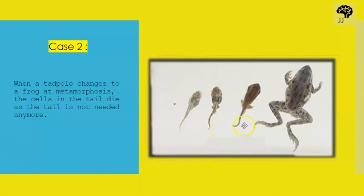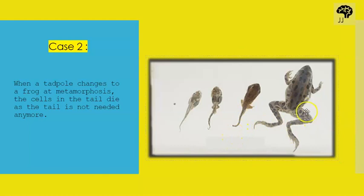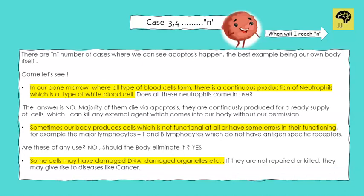The second example: here we can see tadpoles — they are adapted to live in water and hence have a tail. A little frog doesn't have a tail because the tail cells are lost due to apoptosis. So the frog now has two big legs so it can hop around anywhere. Little froggy says thank you, apoptosis!